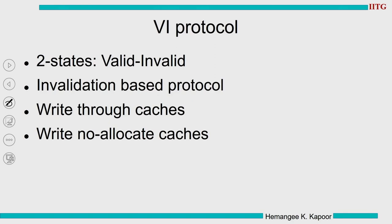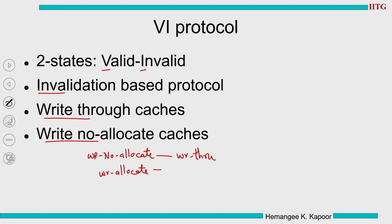Now we will discuss the VI protocol. It is a two-state protocol: V is for valid and I is for invalid. It is an invalidation-based protocol and not an update-based protocol. The caches are write-through and write-no-allocate. Write-no-allocate is paired with write-through: when a write happens to a block that is not in the cache, simply send the data to the next level. When we have write-no-allocate, we pair it with a write-through cache; write-allocate is paired with write-back. So the VI protocol is invalidation-based, write-through, and write-no-allocate.